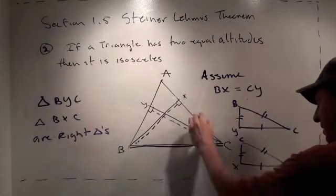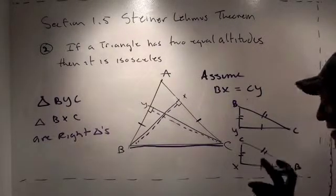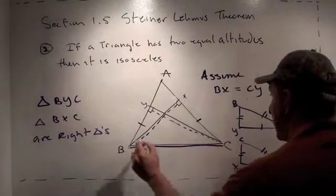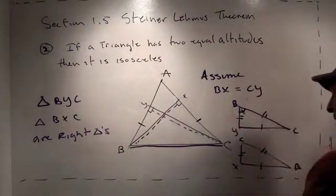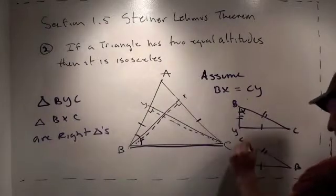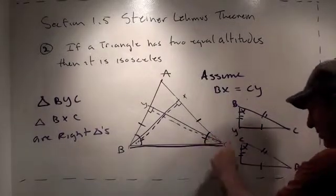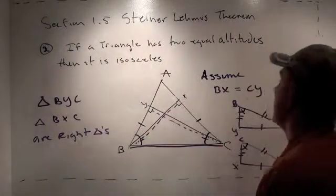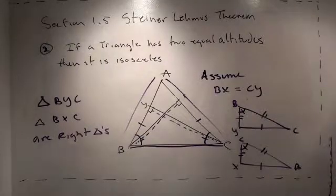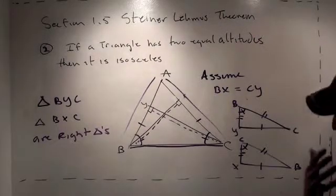That's very interesting, and it also tells us one other thing: it tells us that angle CBY equals angle BCY. So we've just discovered that angle C in the big triangle ABC equals angle B, which means that AC and AB are the same, which means triangle ABC is isosceles. If a triangle has two equal altitudes, then it's isosceles. Not so hard to prove.